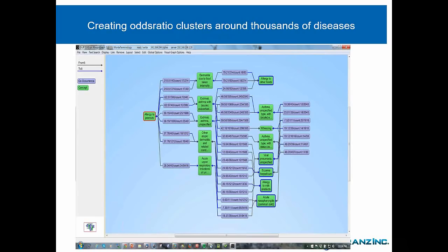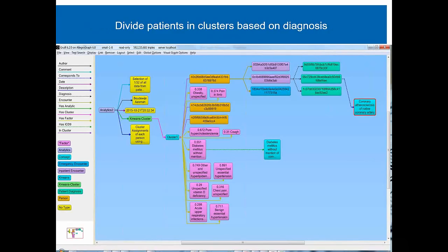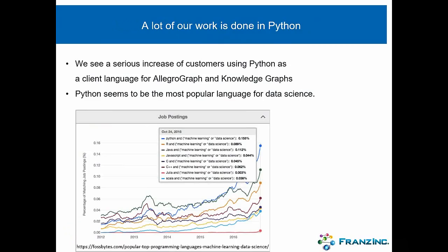In my presentations you may have seen pictures where we do a knowledge graph in healthcare, where for about 10,000 different types of symptoms I can instantly show the disease graph around any disease — for example, things related to peanut allergy. I have patients with symptoms and I can do cluster analytics, and you can see the output of that clustering in graph form, showing the main factors and how particular patients load on each cluster. This is one of the really cool things about our knowledge graph.